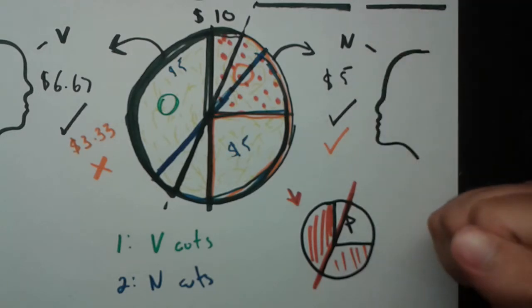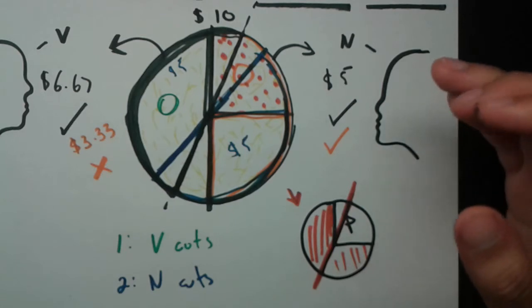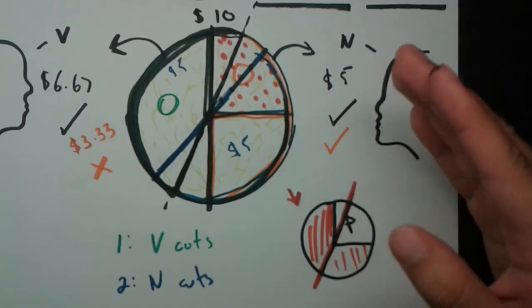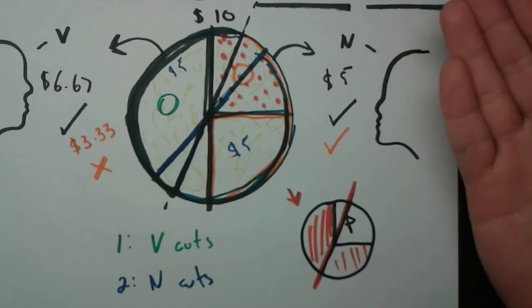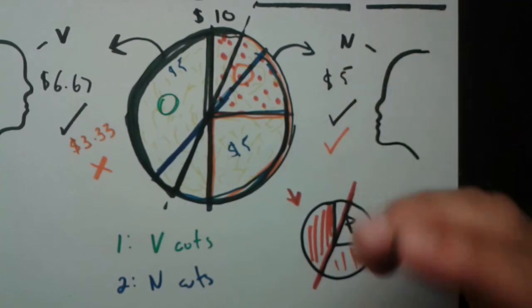That's the basics of the two player divider selector method. What you have to keep in mind is the divider always cuts it into two pieces that are each worth the same amount to him. And the selector will just choose the piece that has the most worth to him. The next video will go into three players, which gets more complicated with more cases. Until next time.